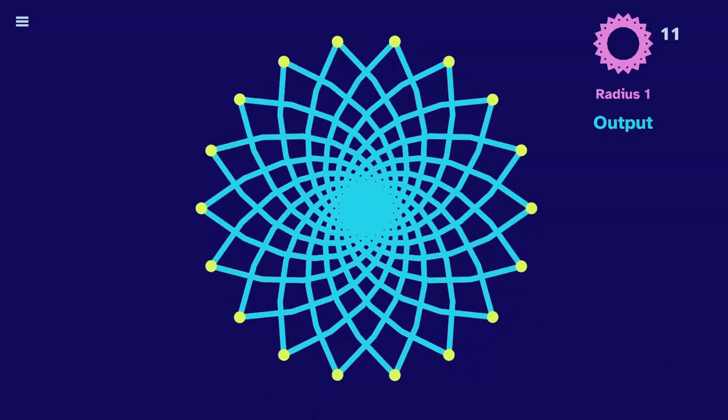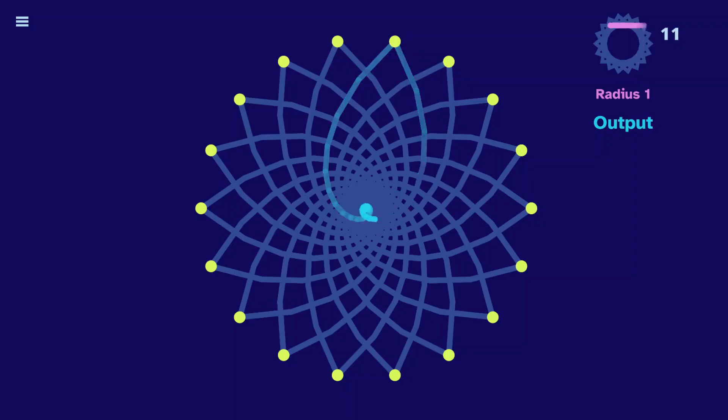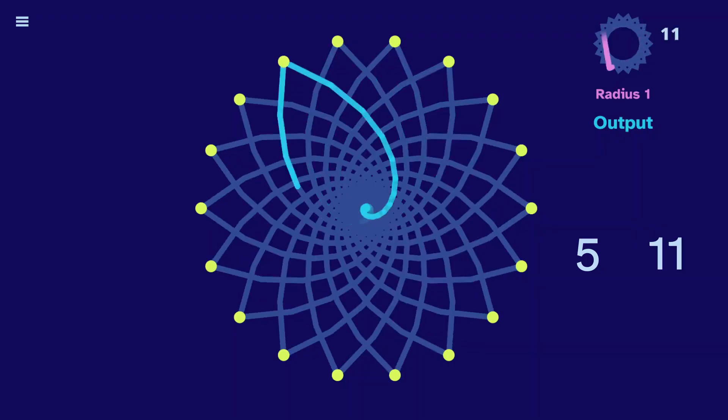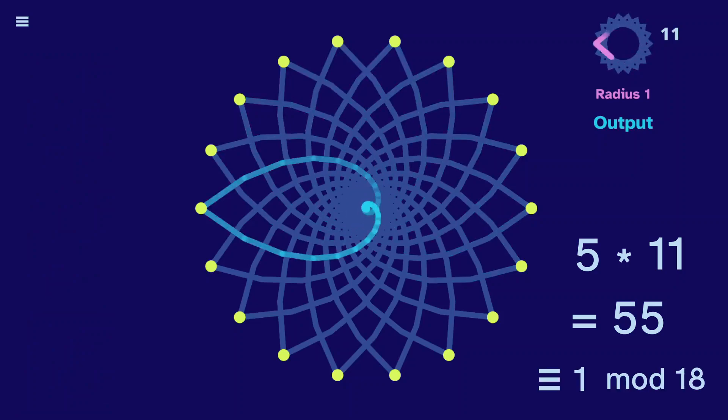Let's stop here and trace the output. It goes around point by point. We made the input star by jumping to every fifth point, then raised that to the eleventh power. So the output is essentially going to every 55th point, and 55 is 1 mod 18, so it goes one by one.